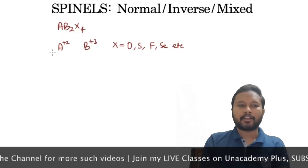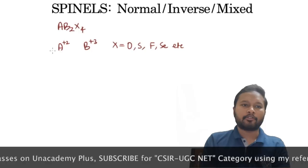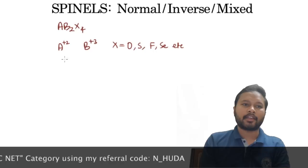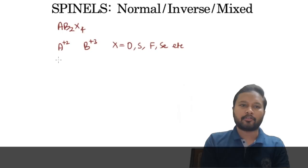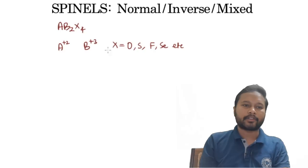As you know, when a crystal lattice is formed, the anions make the lattice and the cations occupy the respective voids. Based on which void a particular cation occupies, we call the spinel normal, inverse, or mixed. Normal and inverse are the most important to understand.